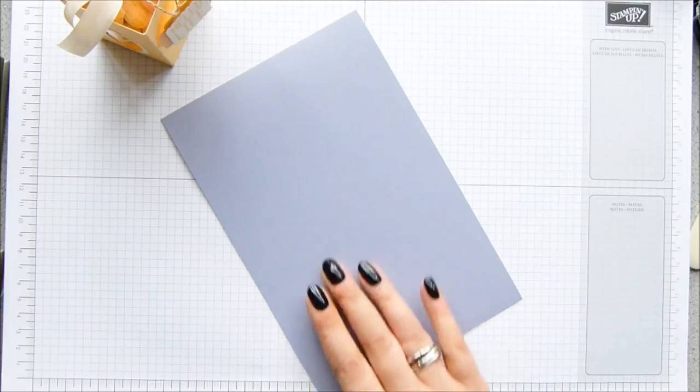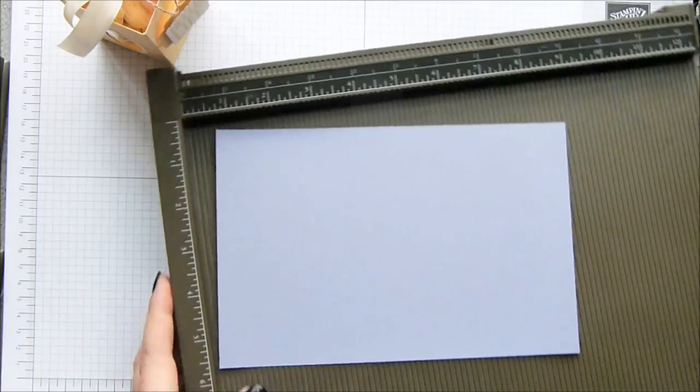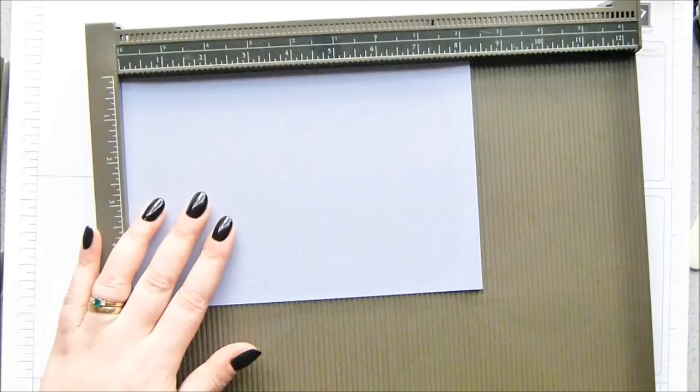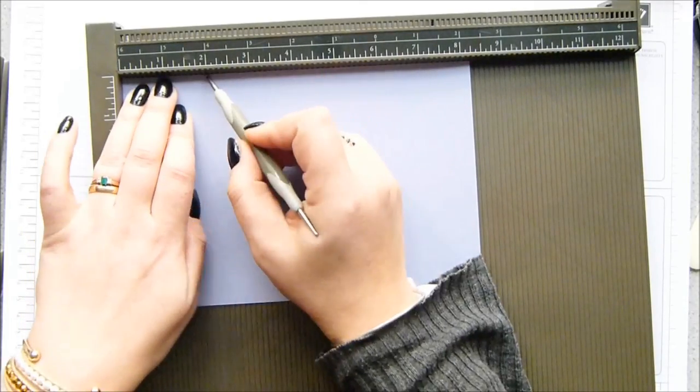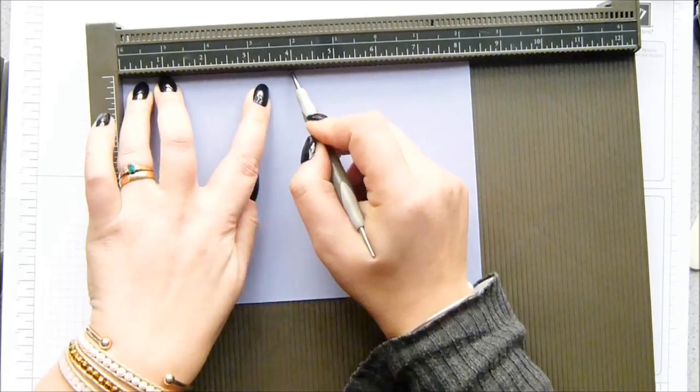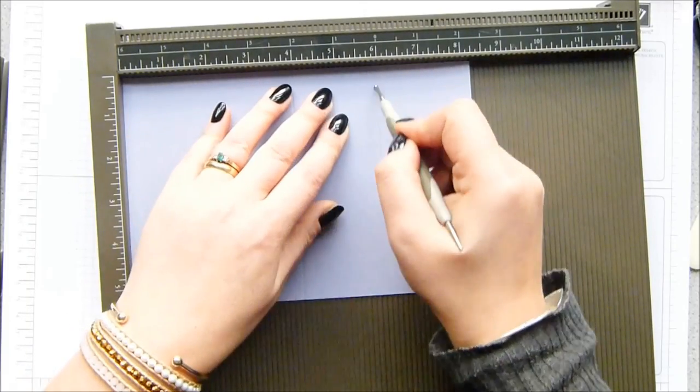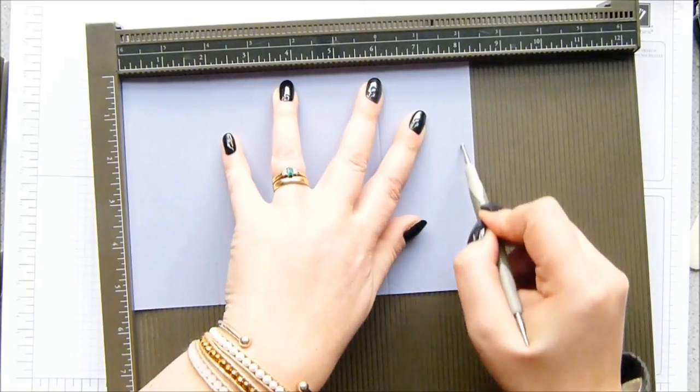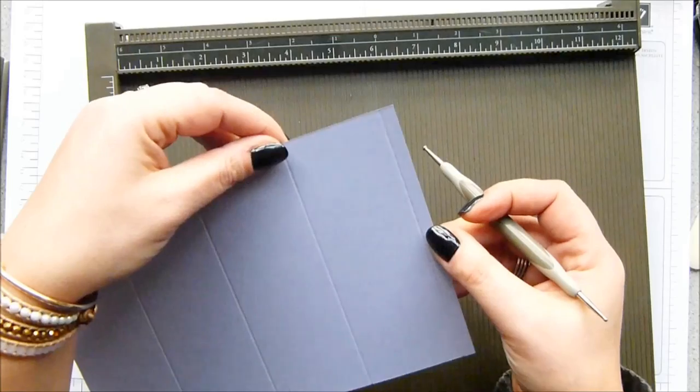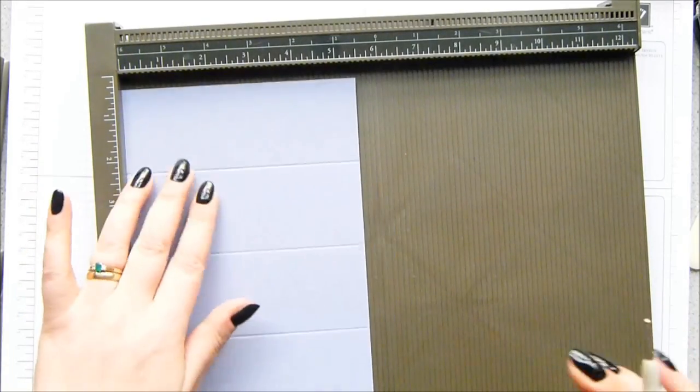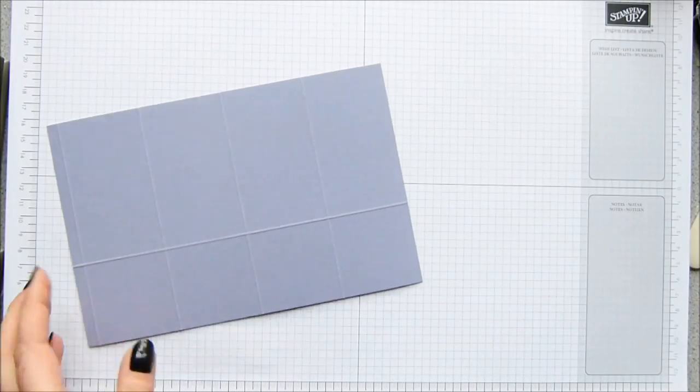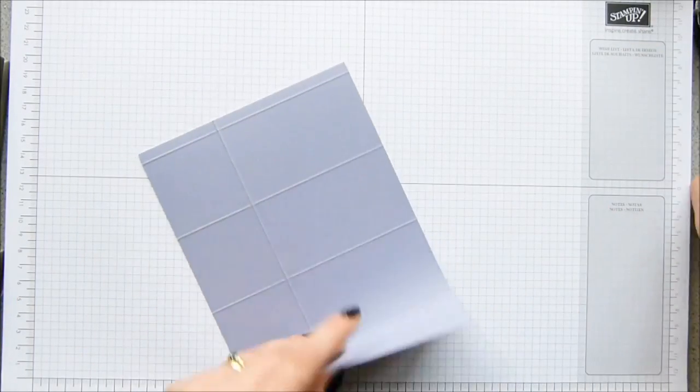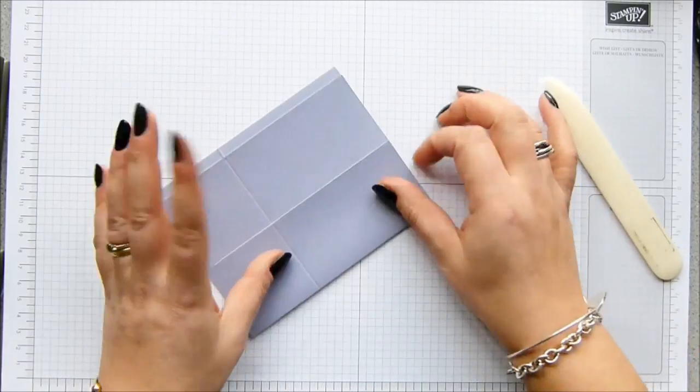So with the long side at the top, score it at two, four, six, and eight inches, which is five, ten, fifteen, and twenty centimeters. Hence why you only have a tiny little bit for adhesive—that's okay, we can cope with that. And then turn it around and score it at two inches, which is five centimeters. Fold all your score lines.